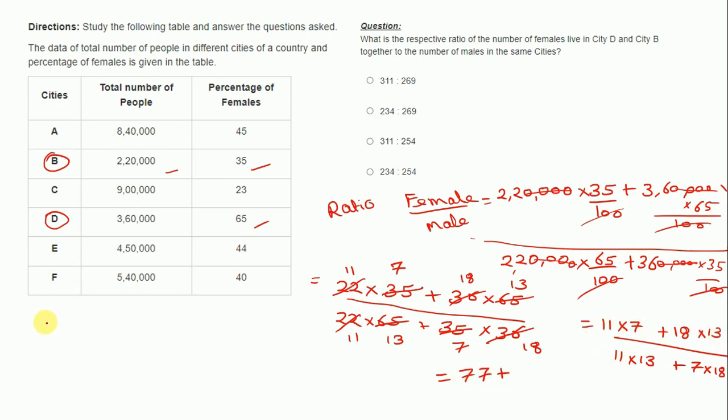We can cancel by 5 and it will be 7, it will be 13. Now we can cancel by 2, it will be 11, it will be 18. Now we are left with 11 into 7 plus 18 into 13 divided by 11 into 13 plus 7 into 18. Solving the upper part: 11 into 7 equals 77 plus 18 into 13 equals 234. The denominator is 143 plus 126 equals 269. The ratio is 311 divided by 269, so option 1 is correct.